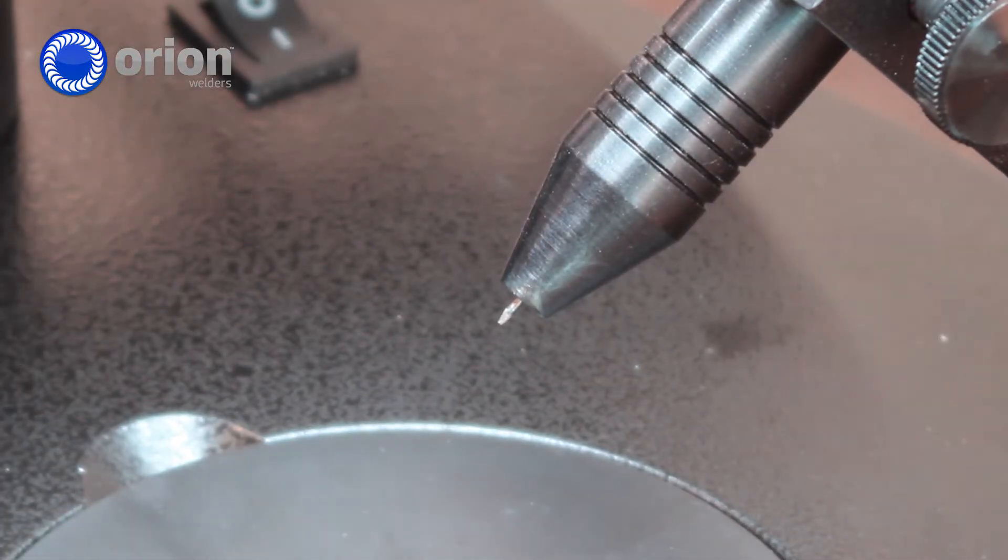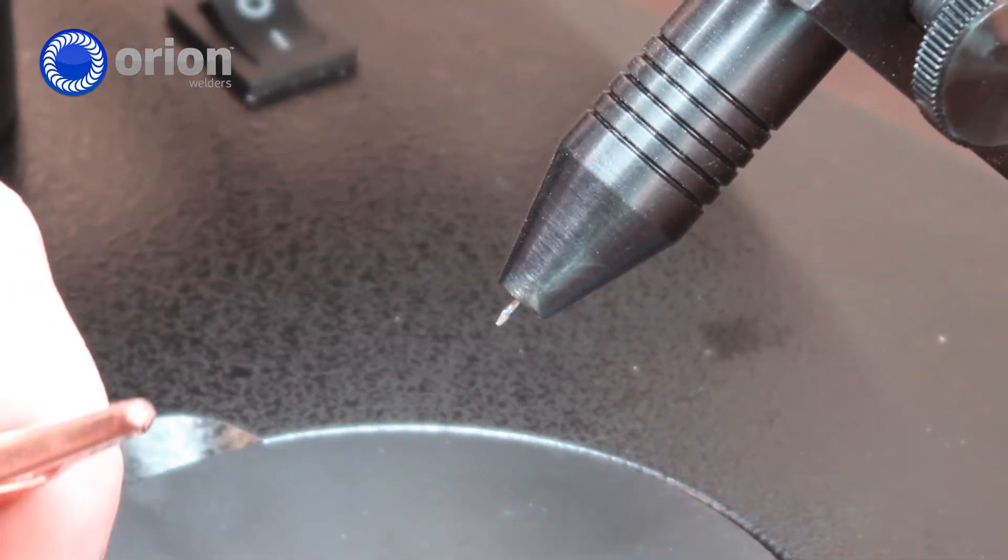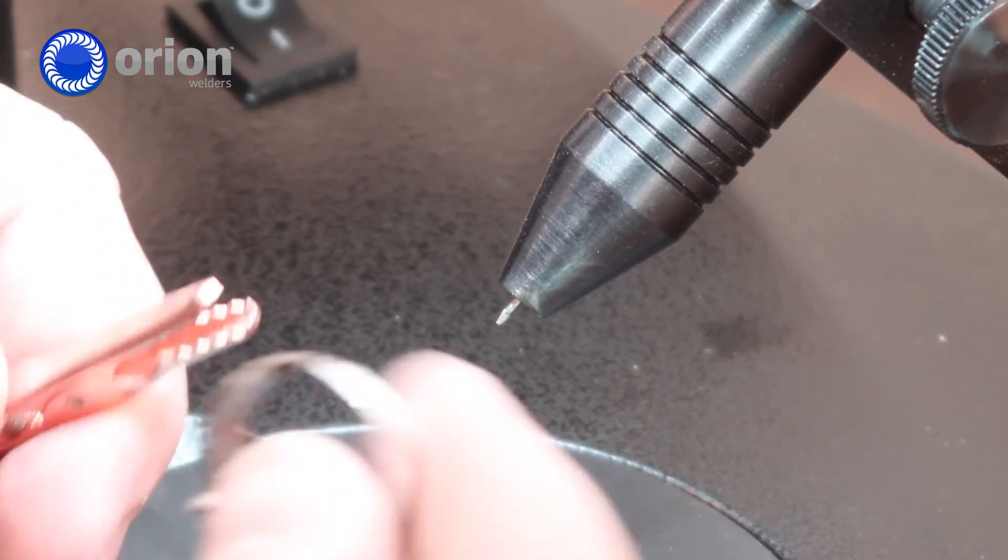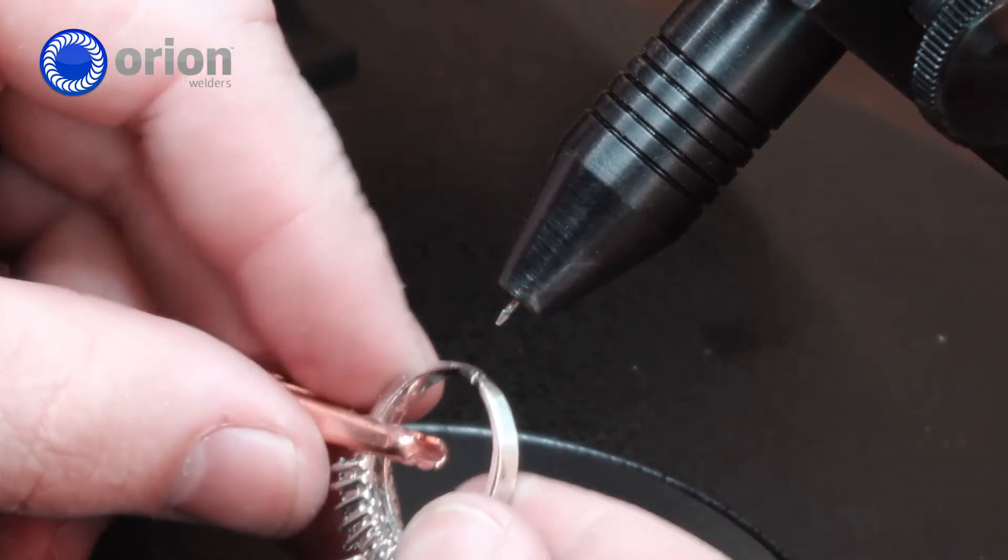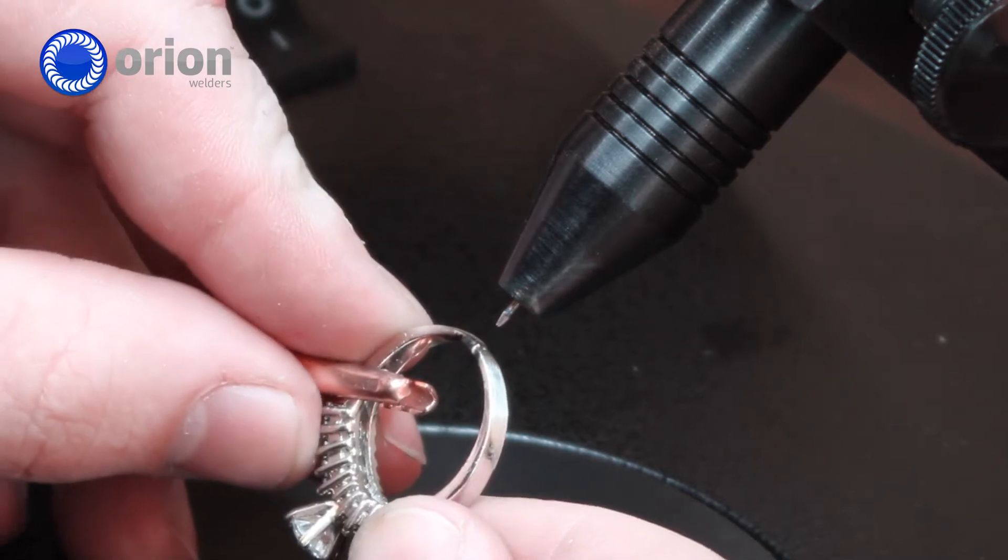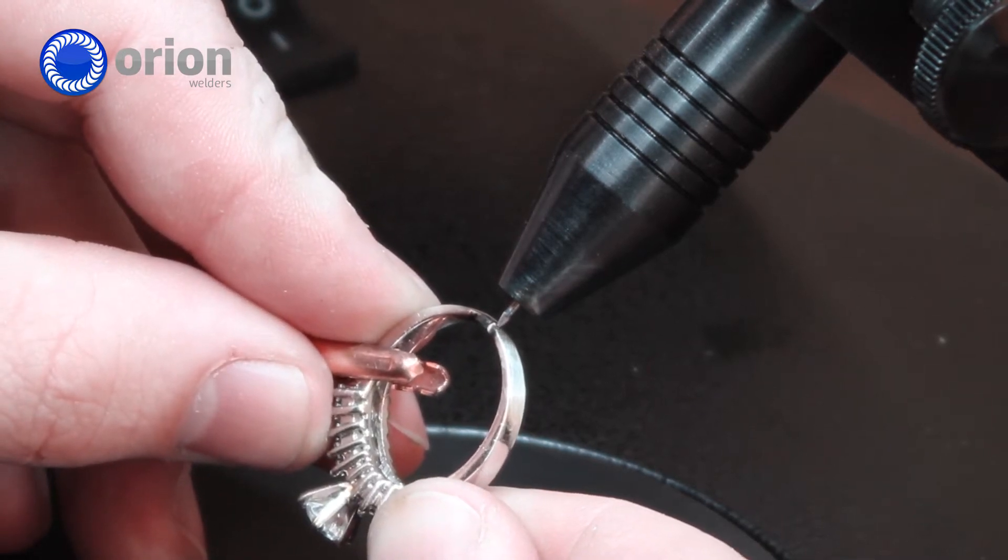So with my blunt electrode I will turn my energy up to permanently bond the ring. I'm going to go to 30 watt seconds to start. And then I simply go ahead and weld right on the joint.